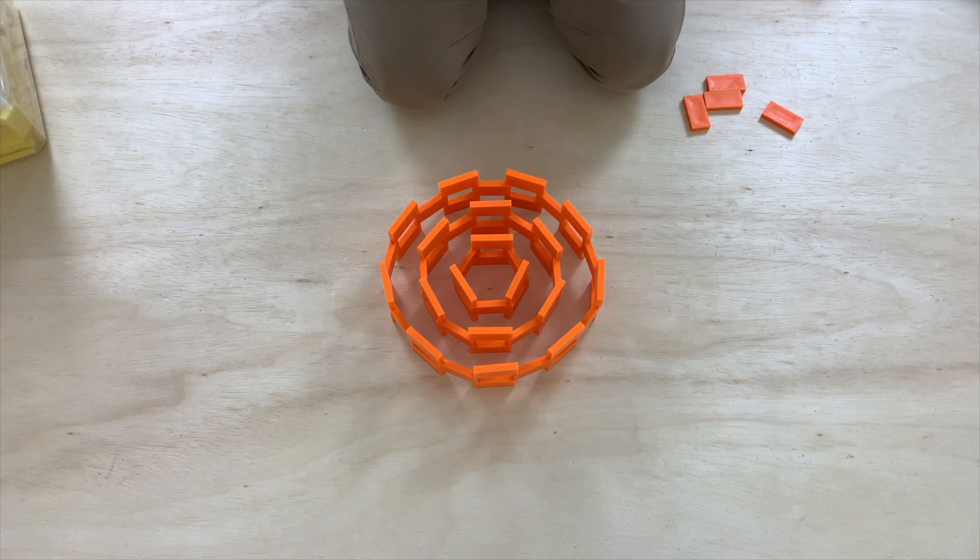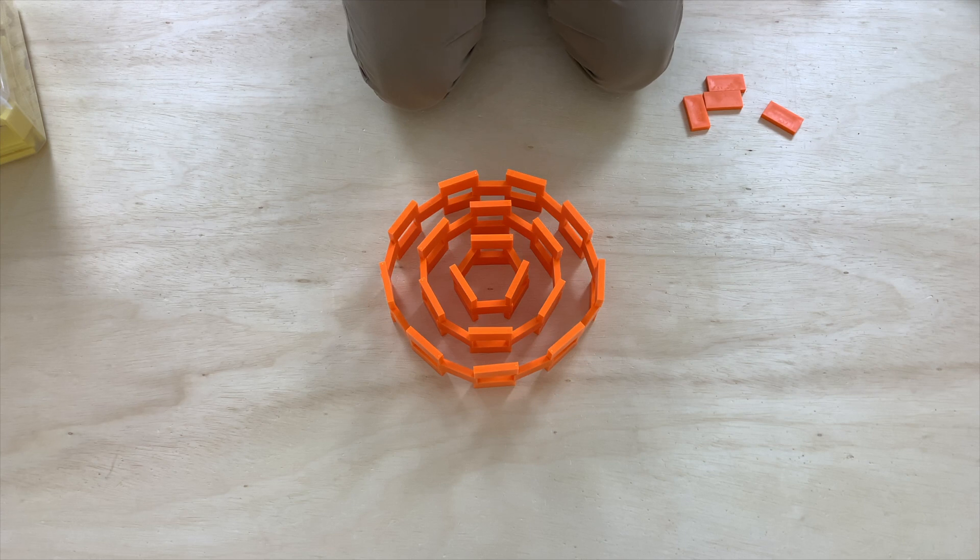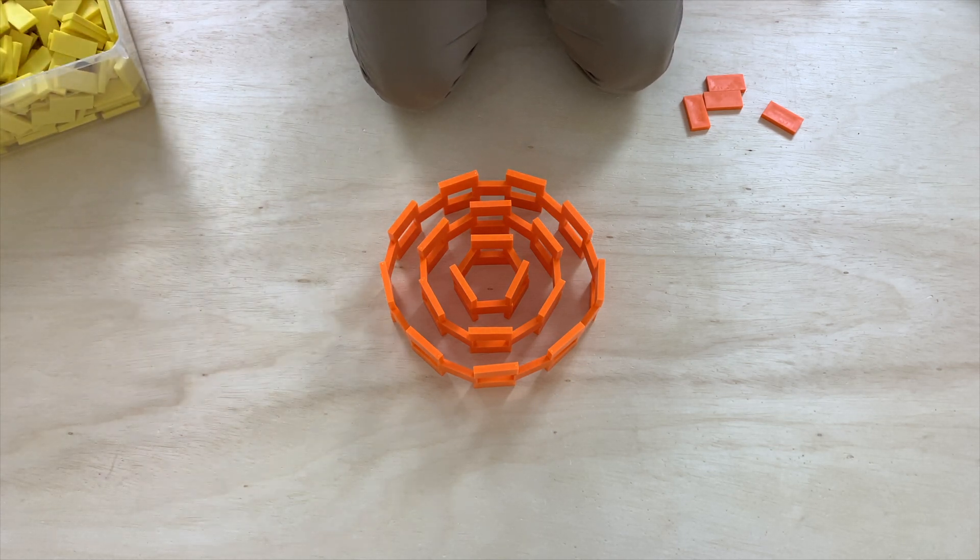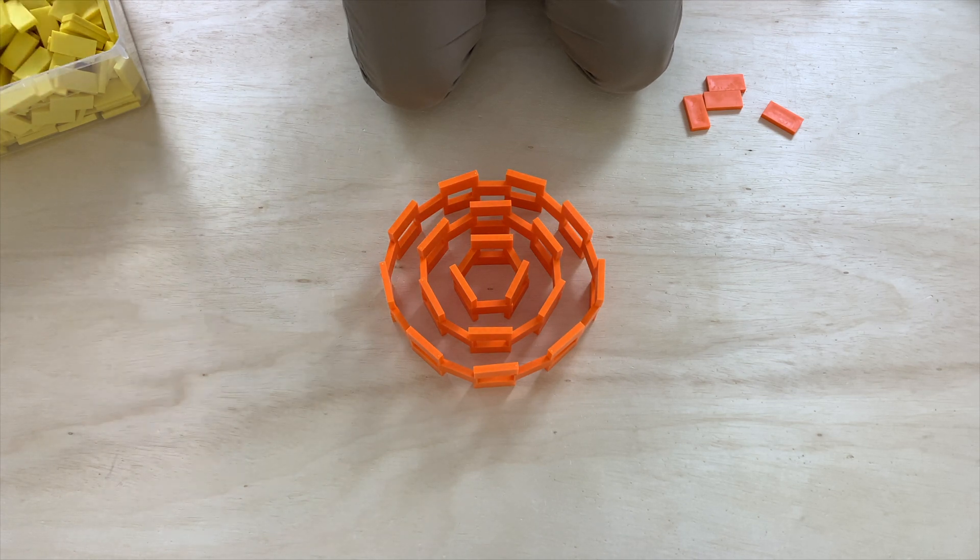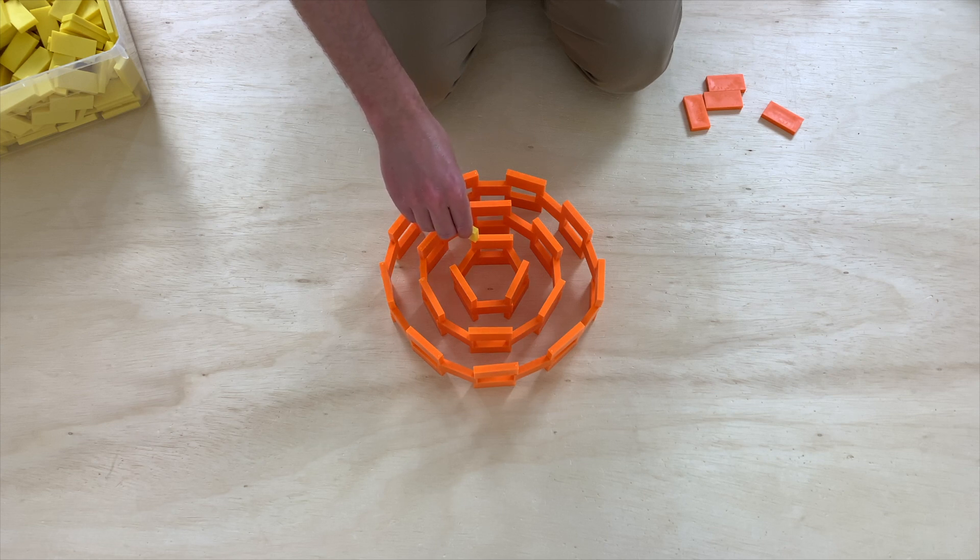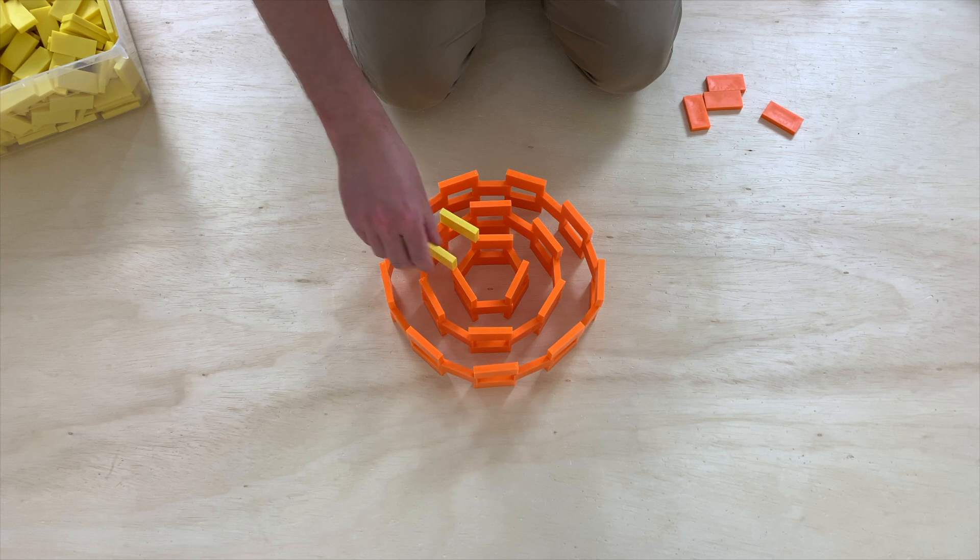Now we're ready for the exciting part, which is where we're going to connect our circles. So to do this, I'm going to use a different color so we can see a little bit better what's going on. And I'm going to start by putting yellow dominoes that are going to connect each vertex of the inner hexagon to the middle circle.